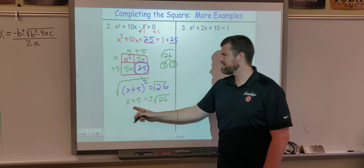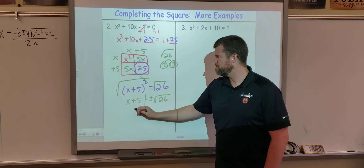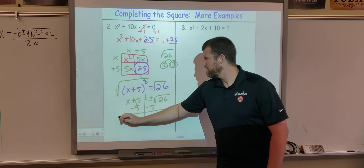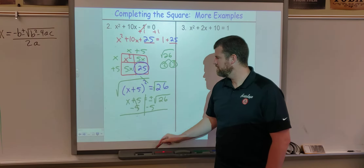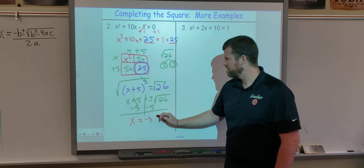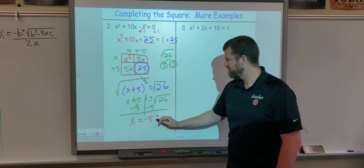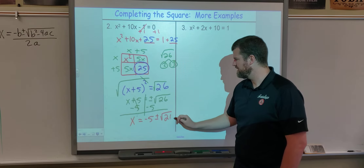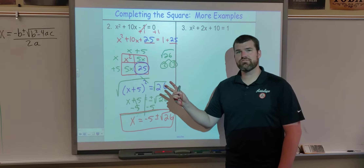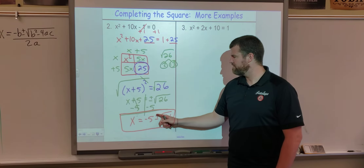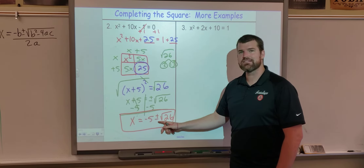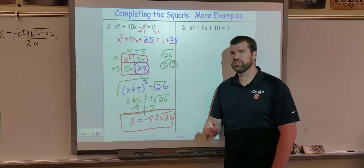Our last step: we want to get x by itself, so we subtract 5 from both sides. Our final solution set is x = −5 ± √26. As a reminder, this is two solutions: negative 5 plus the square root of 26, and negative 5 minus the square root of 26.